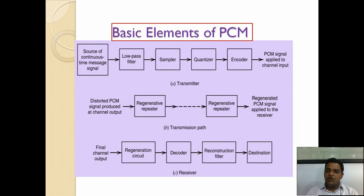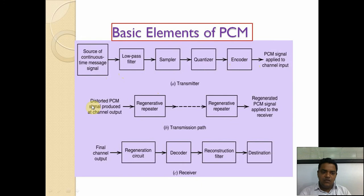In the basic elements of PCM, the source of the continuous time message signal is given as input to the low pass filter, then sampler, quantizer, encoder, and then the PCM signal is produced. The distorted PCM signal produced at the channel is given to the regenerative repeater, and after that the regenerated PCM signal is applied to the receiver, then passed through the regenerative circuit decoder, reconstruction filter, and the destination.